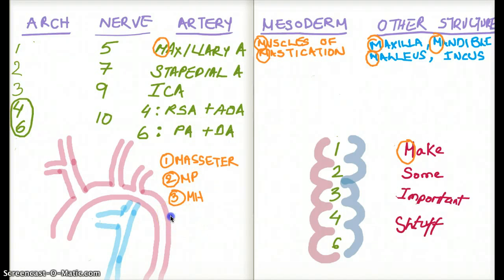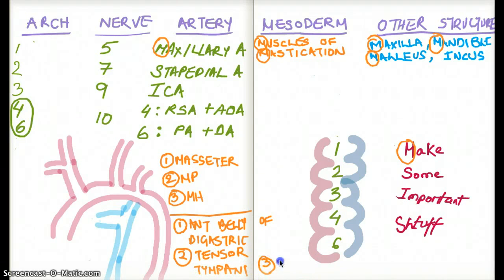There are other ones which do not rhyme with M, and you kind of have to remember them, like some structures. And these include anterior belly of digastric, and then there are the T's, which include tensor tympani, tensor tympani, and then there is the tensor veli palatini.